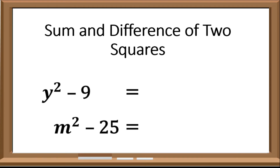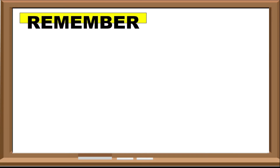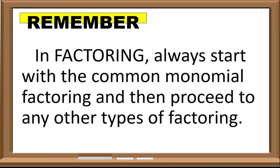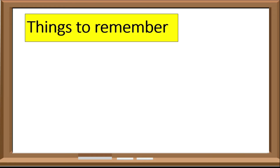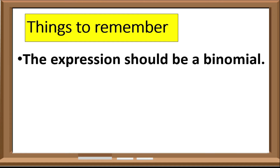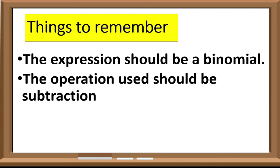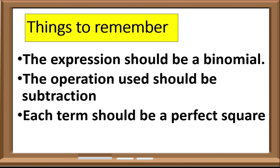I think you are ready for factoring difference of 2 squares. Take note: in factoring, we always start with common monomial factoring before proceeding to different kinds of factoring. Difference of 2 squares is just the reverse process of finding the product of the sum and difference of 2 terms. Here are the things to remember: first, the expression should be a binomial; second, the operation used should be subtraction; and lastly, each term should be a perfect square.